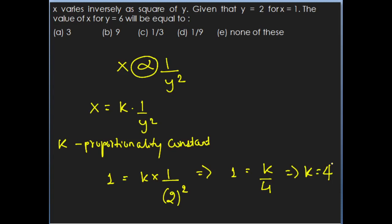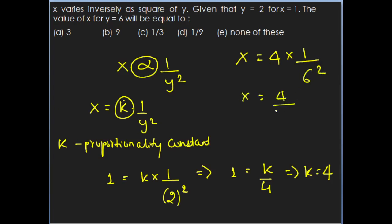Now find the value of X for Y equals 6. With k equals 4: X equals 4 into 1 upon 6 squared equals 4 upon 36. Therefore X equals 1 upon 9. Hence option D will be the answer.